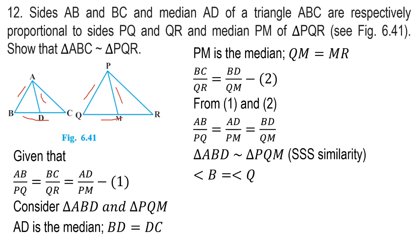Since the triangles are similar, corresponding angles are equal. Therefore, angle B is equal to angle Q.